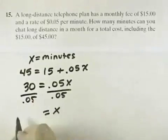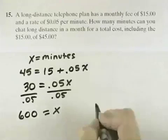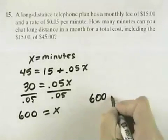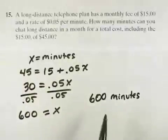We'd have X equals, when we do that we'd get 600. So what that means is that we can talk for 600 minutes at 5 cents per minute plus our $15 monthly charge, and that should give us a total bill of $45.